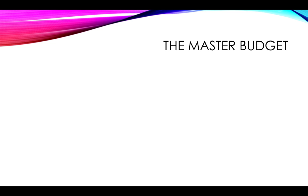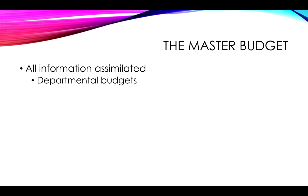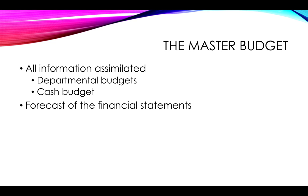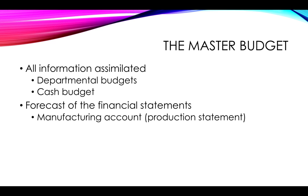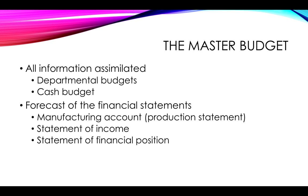The master budget can then be drawn up after having done all the departmental and cash budgets. All the information that you have created needs to be assimilated. The departmental budgets, which may be drawn up by each department and then fed through, as well as the cash budget, will be used to put all this information together into one main master budget. The master budget is quite simply a forecast of what the financial statements are expected to look like in the future. In other words, you would draw up a forecast manufacturing account or production statement to forecast what your production costs would be. You would draw up a forecast statement of income to predict your net profit for the period, and you would draw up a statement of financial position as at a future date. This will help you to see what your assets, equity, and liabilities are expected to look like.